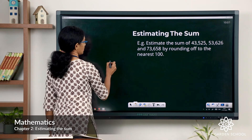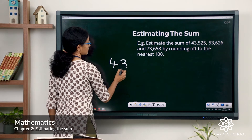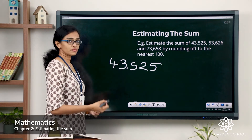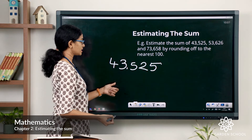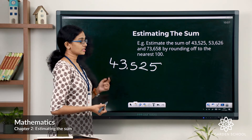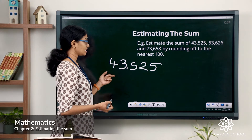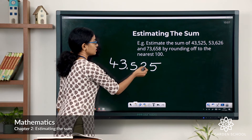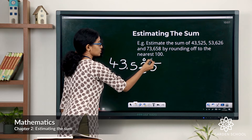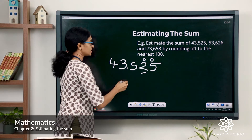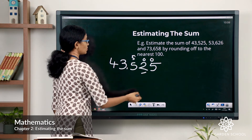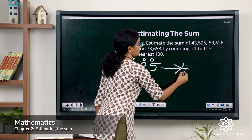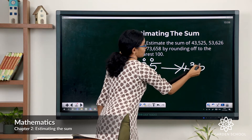The first number is 43,525. To round off to the nearest 100, the rounding digit is the hundreds digit. We check the digit to the right of the rounding digit — it is 2, which is less than 5. So we just change the tens and ones to zeros and keep the rounding digit as it is. So 43,525 rounded off to the nearest 100 equals 43,500.